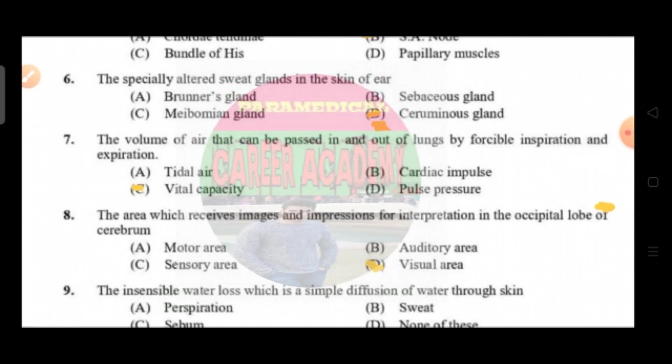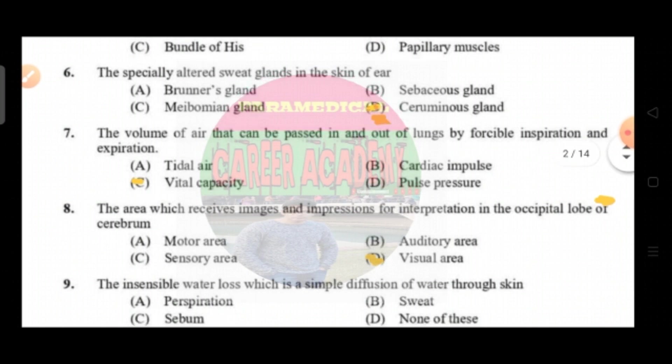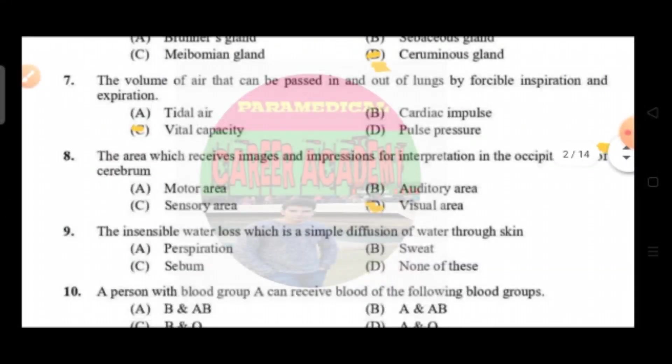Question number six: the specially altered sweat glands in the skin of the ear. Option A is Brunner's gland, option B sebaceous gland, option C meibomian gland, option D is ceruminous gland. The correct answer is option D, that is ceruminous gland.